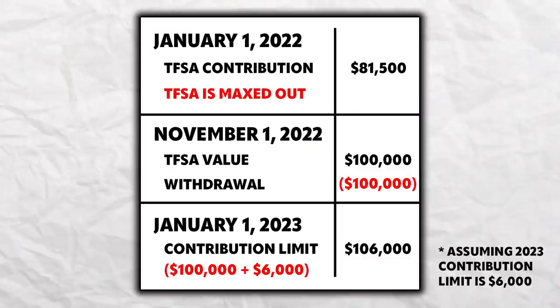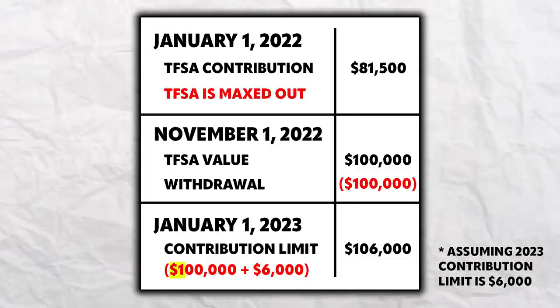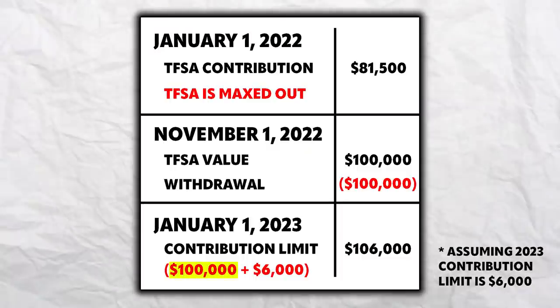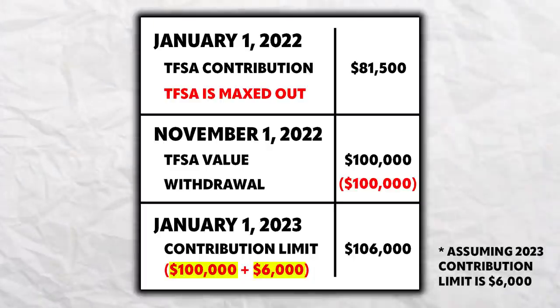It would be very difficult to build back up to your contribution room. With the TFSA, you actually generate more contribution room from growth of the investment. So if your $81,500 grows to $100,000 and you cash it out of your TFSA, the following year you can put back in $100,000. The growth is new contribution room if you draw it out — that's a big confusion as well.